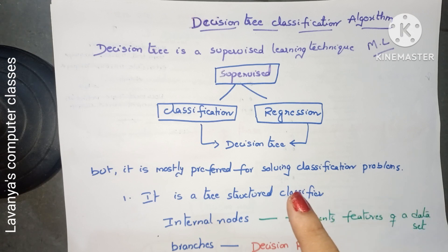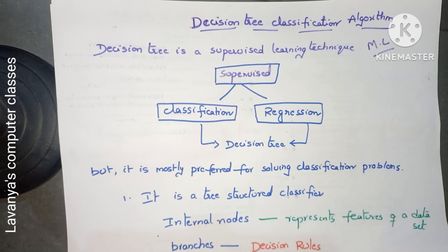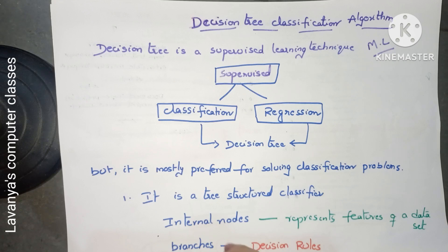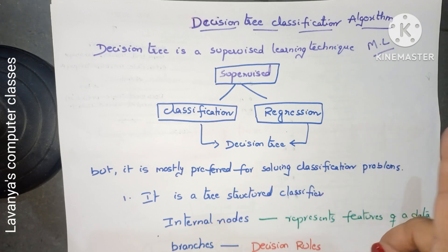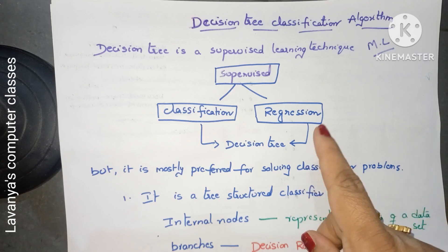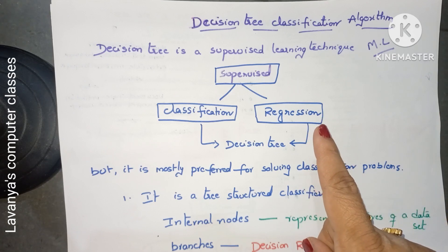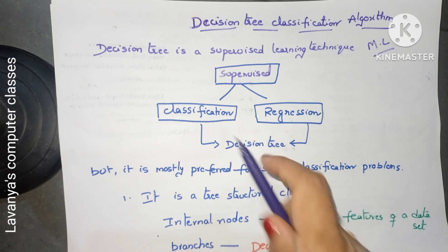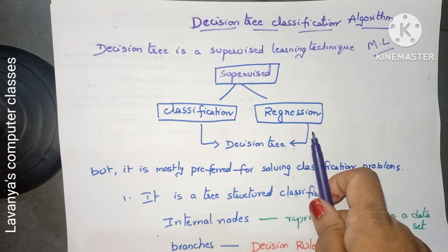First, what is a decision tree? Decision tree is a supervised learning technique. In machine learning there are three types of learning algorithms: supervised, unsupervised, and reinforcement. In supervised learning there are two types: classification and regression.